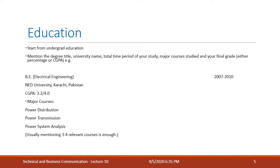In education, you need to mention the degree title, the university or school name, the total time period you took for your study, the major courses you studied, and your final grade — whether percentage, CGPA, or whatever it is. For example, someone's CV shows a Bachelor's in Electrical Engineering from NED University, 2007 to 2010, with a CGPA of 3.2, and major courses listed as power distribution, power transmission, and power system analysis. Mention three to four relevant courses only — do not list the entire course catalog and do not mention irrelevant courses.